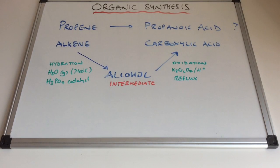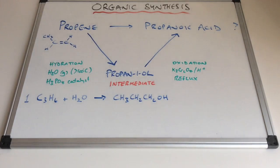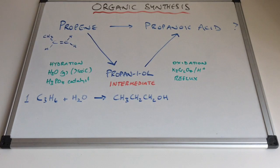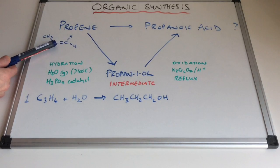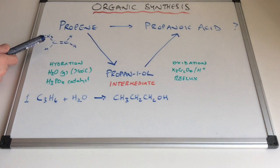Now we've established the route, we need to think about the chemical equations for the reactions. For step one, turning propene into an alcohol, it's really important that this alcohol is propan-1-ol and not propan-2-ol. Looking at the displayed formula for propene, when water adds across the double bond, the H can add on either carbon, which means the OH goes on the other carbon — so it is technically possible to make propan-2-ol from propene.